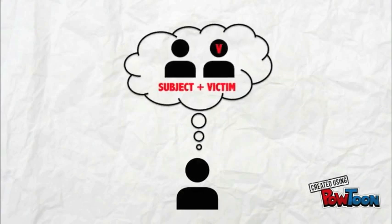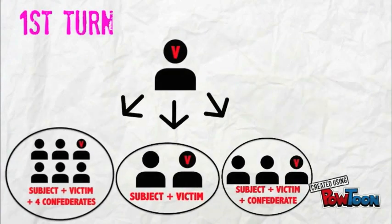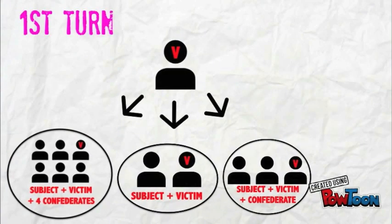In addition, the subjects were made to think that they were either in groups of 2, 3 or 6. In every group, each individual took turns to speak. In the victim's first turn, he mentioned that he was prone to seizures.